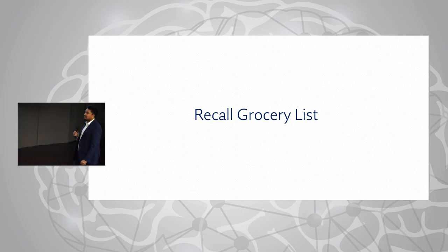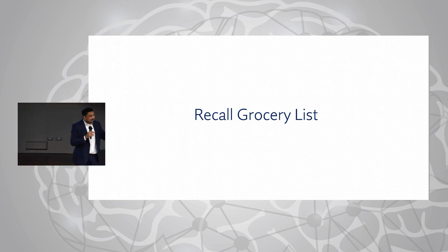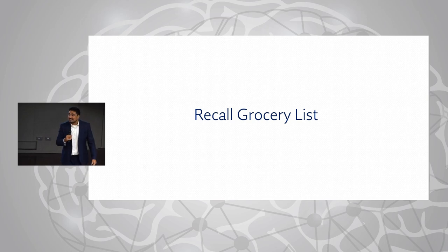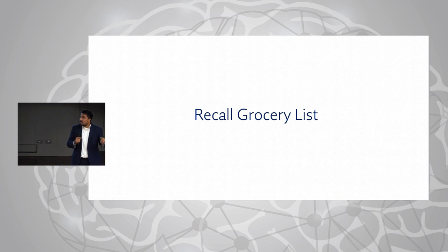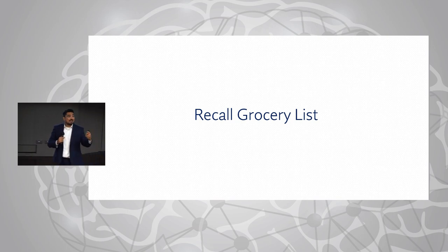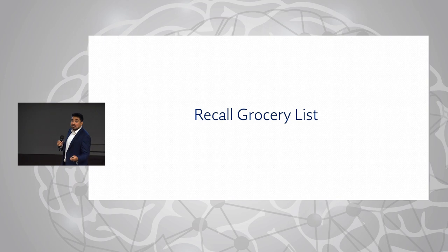This is level one — just eight items. But that shows you how we memorize as so-called mental athletes. It doesn't matter if it's a list of eight, ten, twenty, a hundred, or a thousand — the main concept remains the same: turn each item you want to remember into a visual image. You've just practiced this technique, so imagine after two or three months, or a year of practice, how far you can go with memorization.